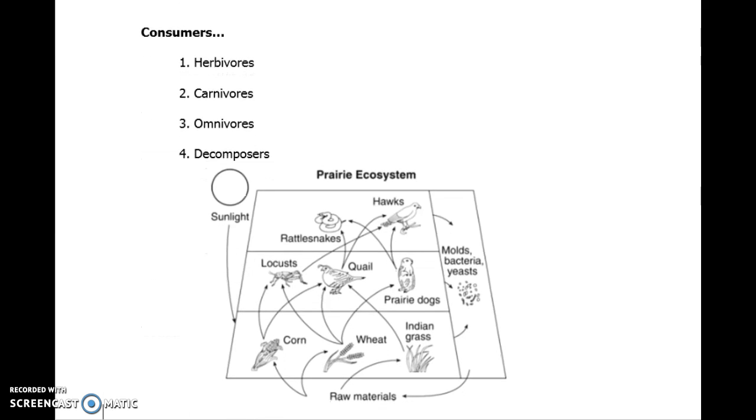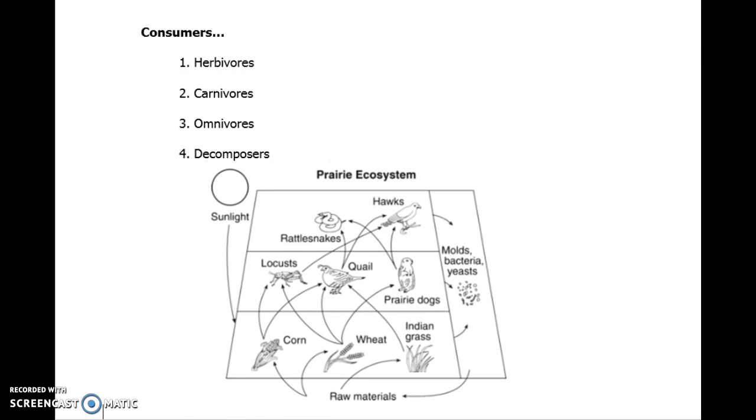There are categories of consumers. Some of these will look familiar to you. For example, an herbivore would be an organism that feeds exclusively on plants. A carnivore would be an organism that can somewhat exclusively feed on other animals. An omnivore feeds on both plants and animals.